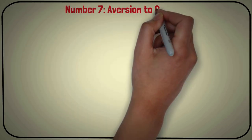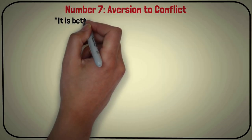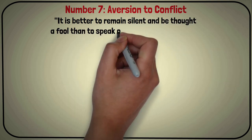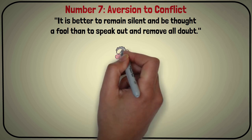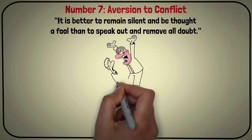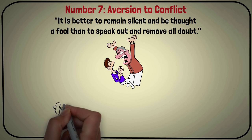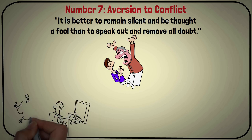Number 7: Aversion to Conflict. It is better to remain silent and be thought a fool than to speak out and remove all doubt. This famous saying aptly describes the Sigma males' aversion to conflict. Sigma males are often so private, not because they wish to be, but because they actively avoid conflict.